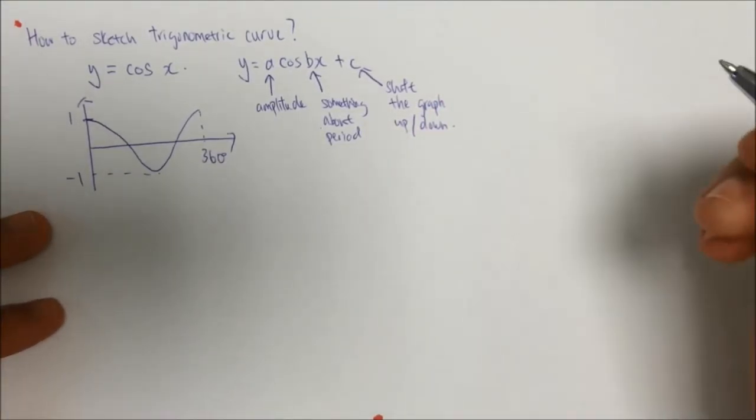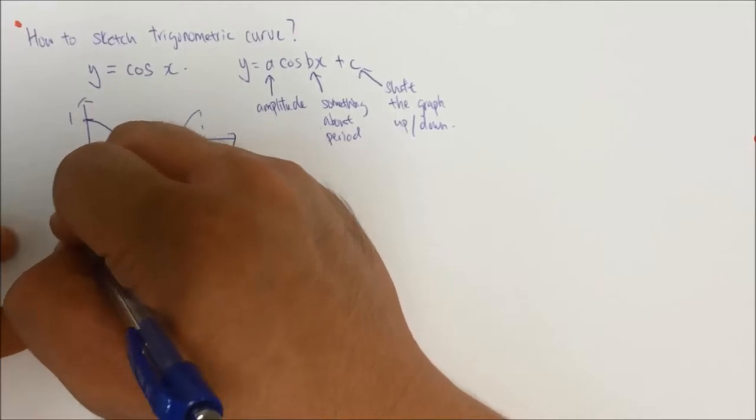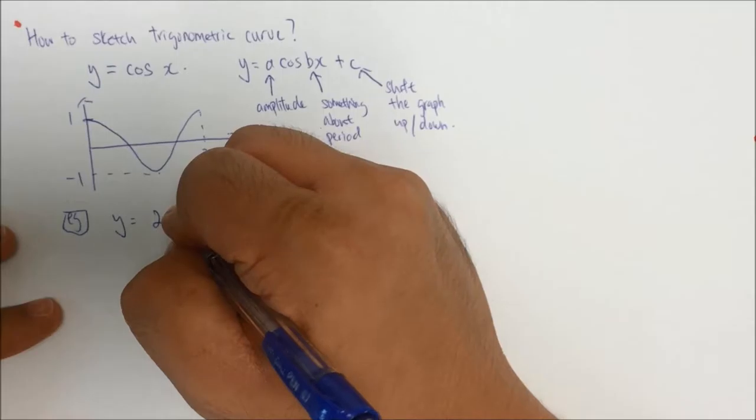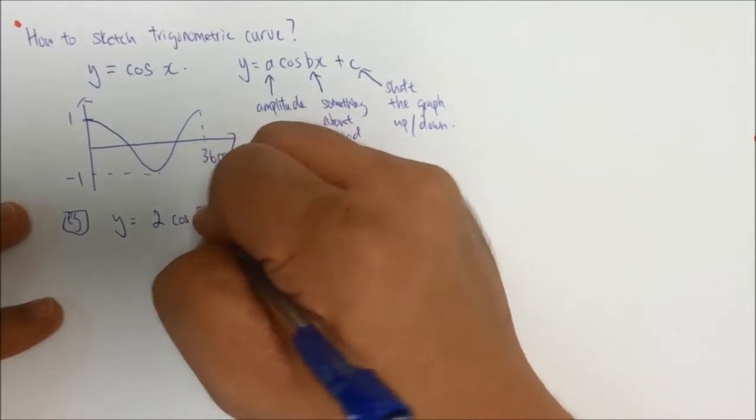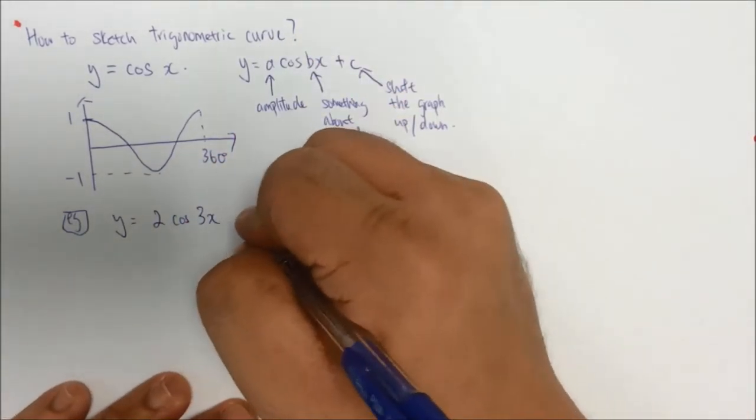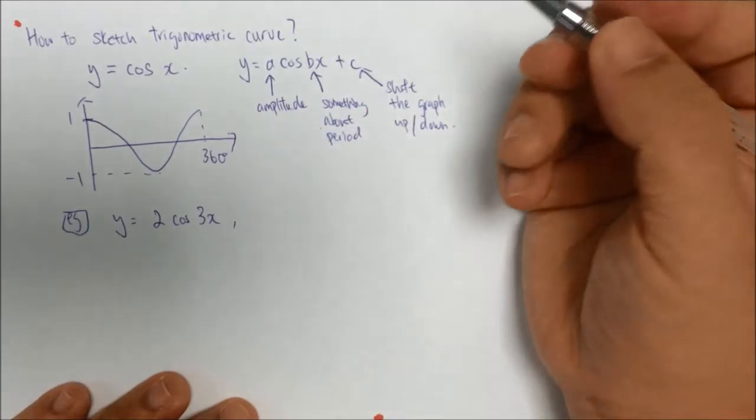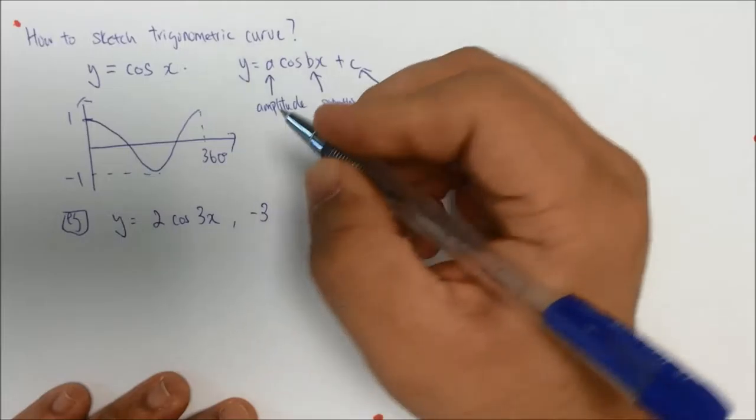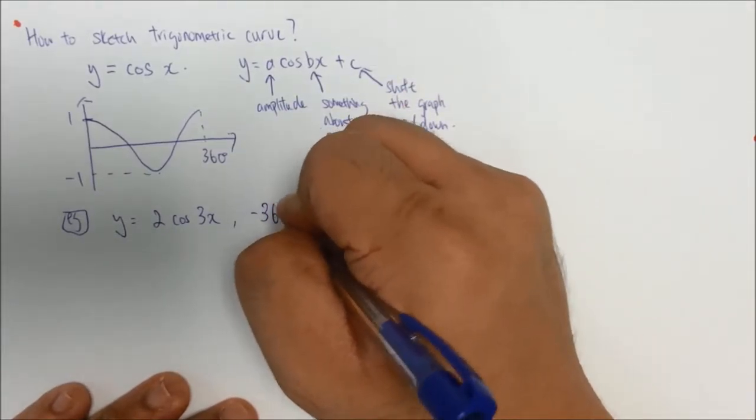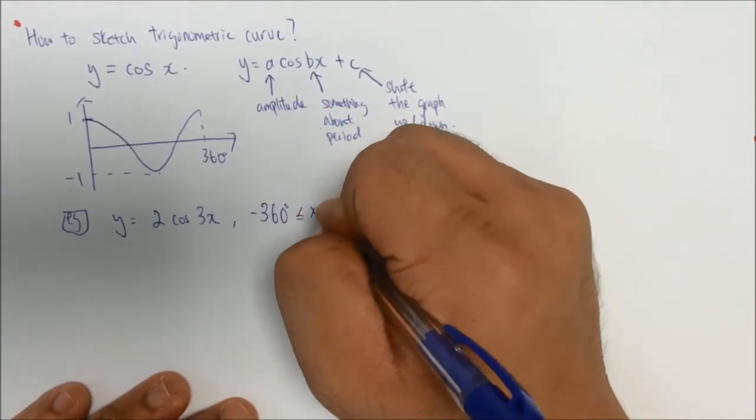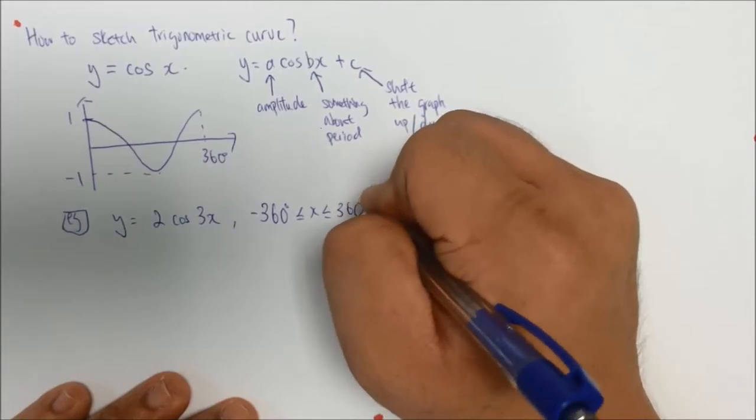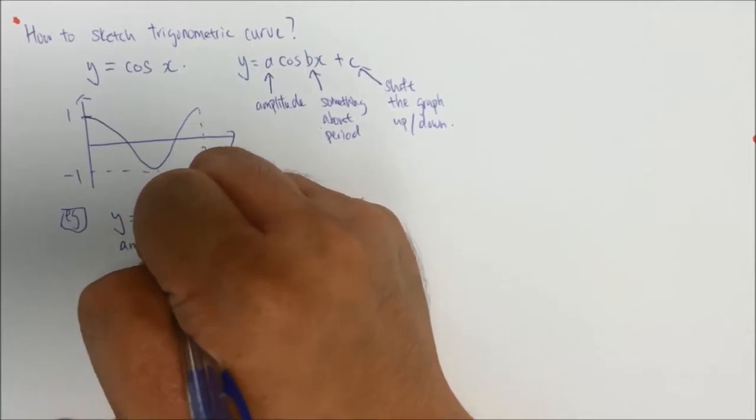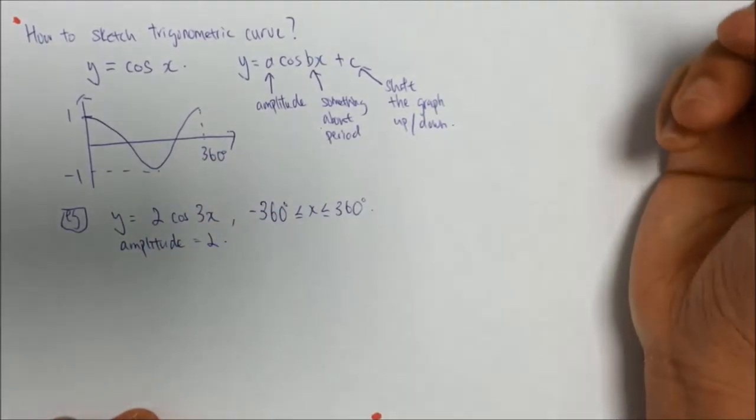So now let's say that I have an example. I'm supposed to draw y equals 2 cosine 3x, and now we change the range a bit. I want to draw from let's say negative 360 to 360 degrees. When I'm drawing this curve, first I have to tell myself what is the amplitude. My amplitude will be 2.